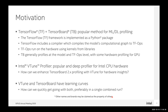One question is how we can enhance TensorBoard profiling with VTune to look at how the hardware is performing. Another question is how we can quickly get going with both. And in order to correlate what we're seeing, can we do both in a single combined run? What I'll show you today is a simple DL model from one of the TensorFlow Keras tutorials, how to add profiling for TensorFlow, and then how to run VTune over all that so we can get both TensorFlow and VTune profiling together.